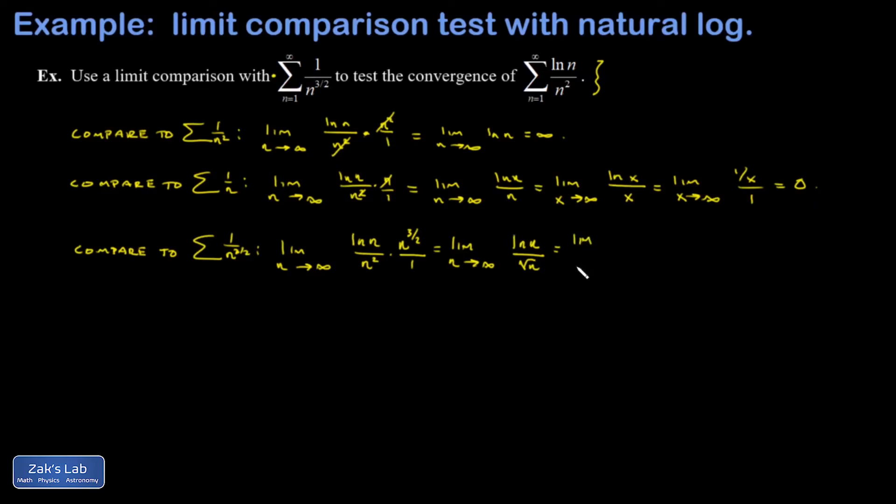That's an infinity over infinity indeterminate form. So again, I'm going to switch to calling it a limit of x functions so I'm allowed to use L'Hopital's rule. I take the derivative of the top and bottom. I get 1 over x over, and then square root of x is x to the 1 half. When I differentiate, I get 1 half x to the negative 1 half, or 1 over 2 root x.